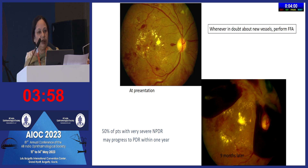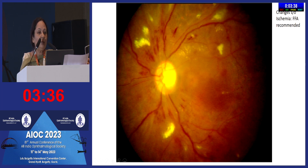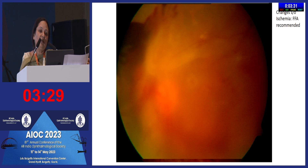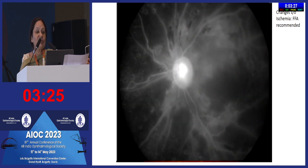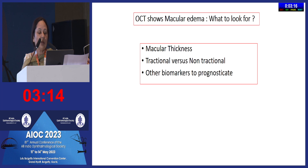In severe NPDR it is critical to look carefully for features of proliferation. Sometimes the retina has multiple cotton wool spots and an ischemic appearance, making it very difficult clinically to be sure whether it is severe NPDR or early PDR — and these are cases that end up with vitreous hemorrhage. Fluorescein angiography in these cases reveals extensive capillary non-perfusion and determines that early aggressive management is needed.